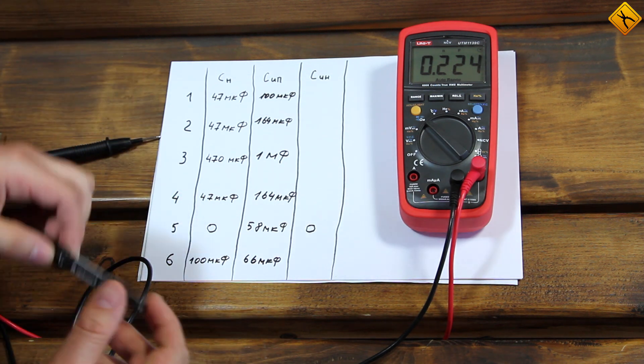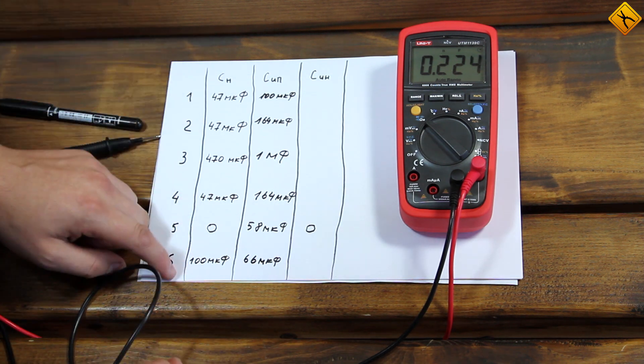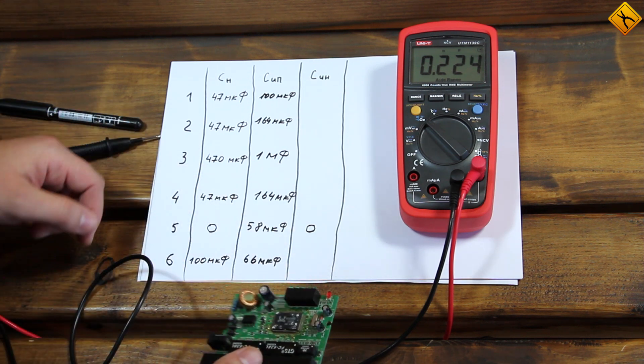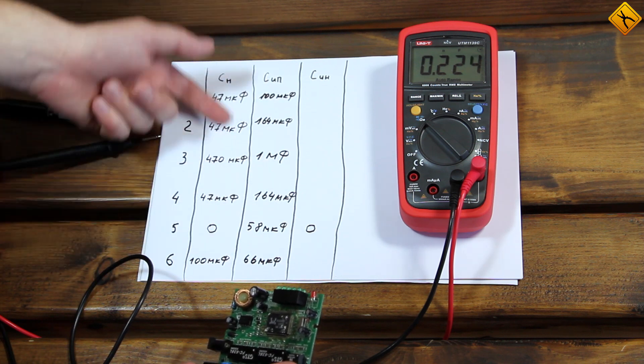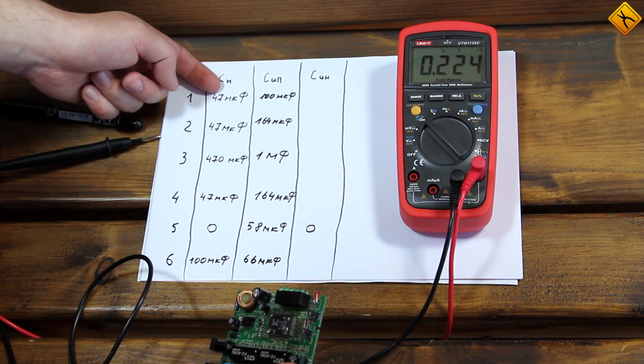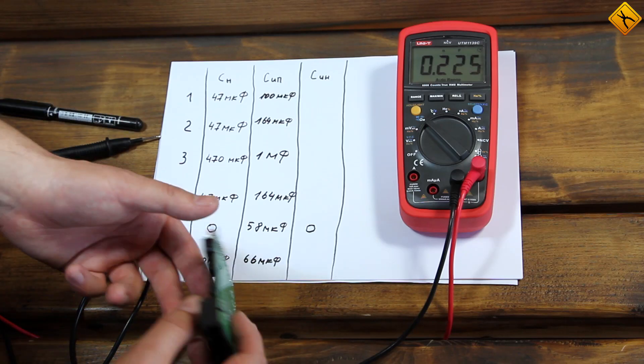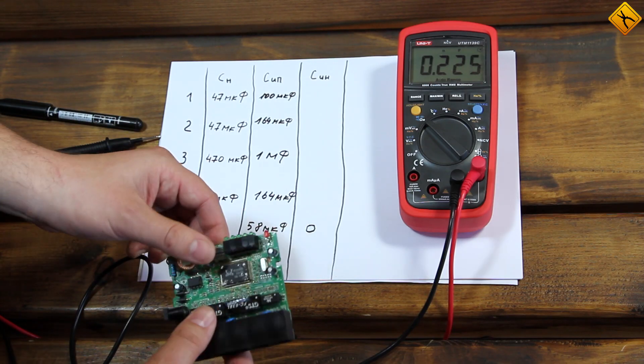As you can see from this first step, if we measure capacitance without desoldering capacitors from the PCB, there is a big difference between the nominal, or stated values, and the measured values. We will now desolder and measure them in a more correct way. It is possible that some of the capacitors' capacitance has changed over time.